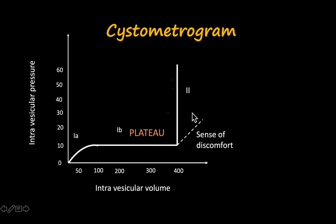The plateau phase exists because of the adaptability of the urinary bladder. Like all smooth muscle, the detrusor has plasticity, which means when the detrusor is stretched by urine, tension is produced initially but is not well maintained. Therefore the pressure rise is not that much even as urine volume increases, and the bladder can accommodate a lot of urine without much change in pressure.